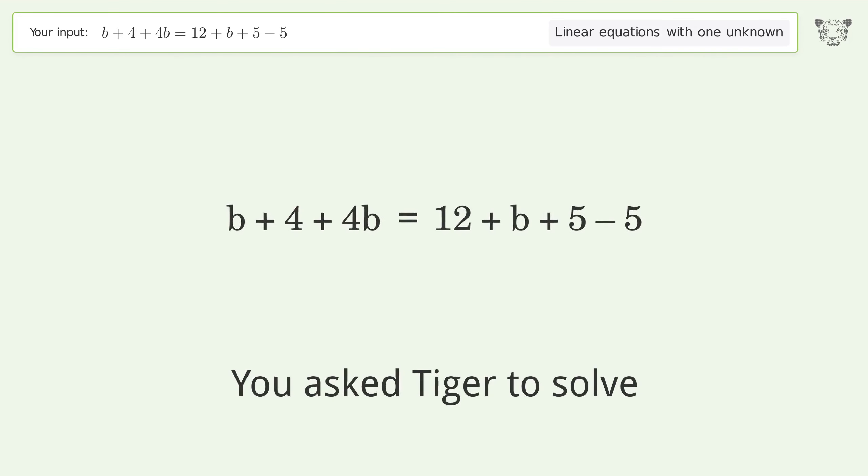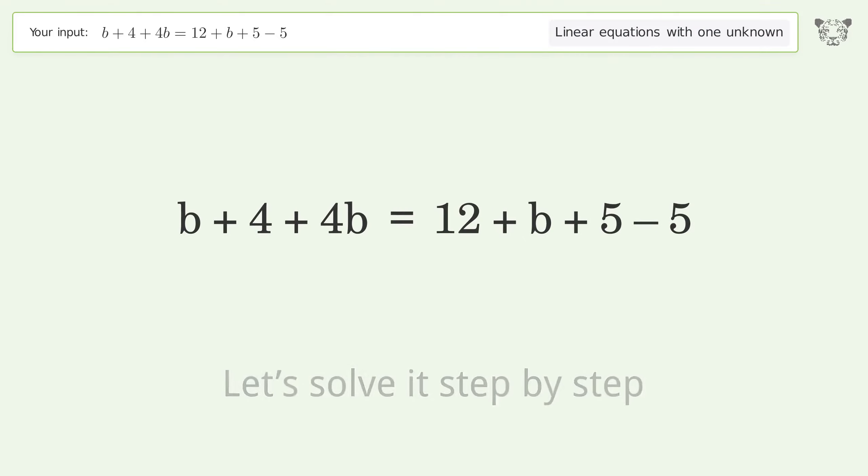You asked Tiger to solve this linear equation with one unknown. The final result is b equals 2. Let's solve it step by step: simplify the expression, group like terms, simplify the arithmetic.